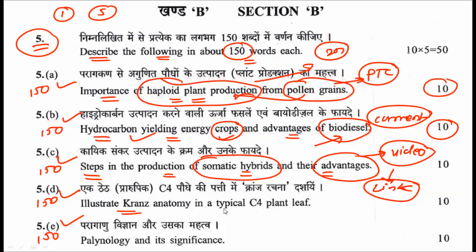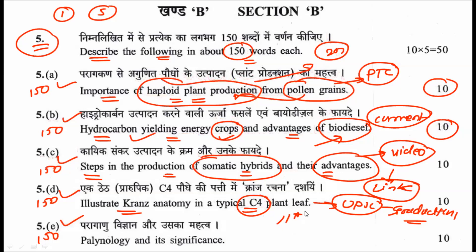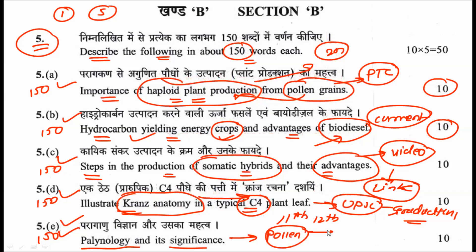The fourth sub-question asks you to illustrate the Kranz anatomy in a typical C4 plant. Although UPSC tends to ask graduation or post-graduation level questions, this one comes directly from 11th and 12th NCERT textbooks — it is quite easy. The fifth sub-question covers palynology and its significance. Palynology is the study of pollen grains; we uploaded a video on this topic last year, so check that video for a complete answer.